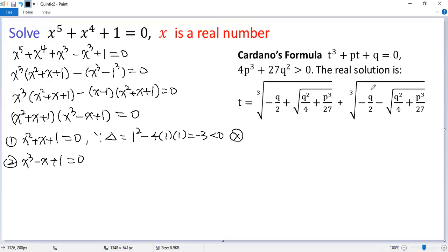So let's use this formula to solve the second equation. We know p equals negative 1, q equals 1.